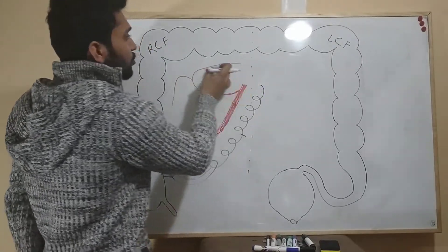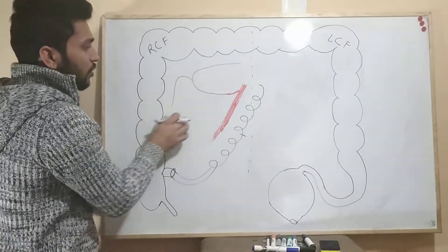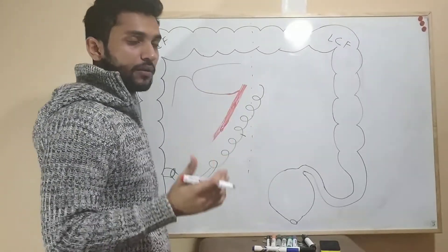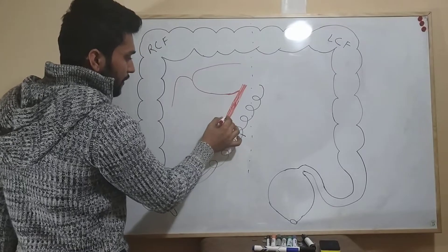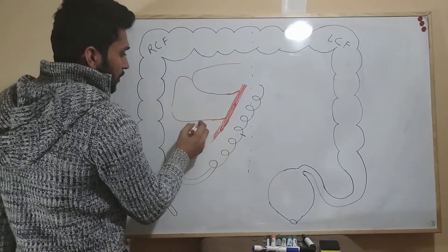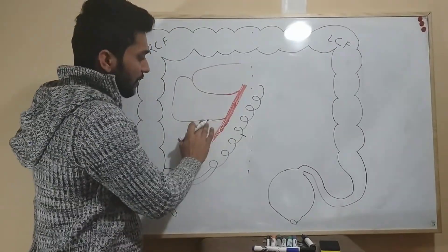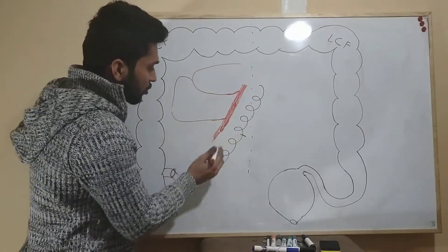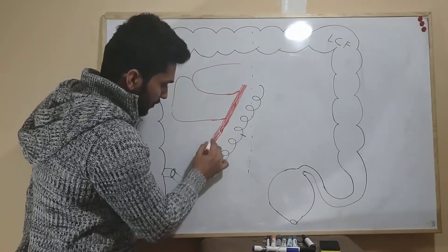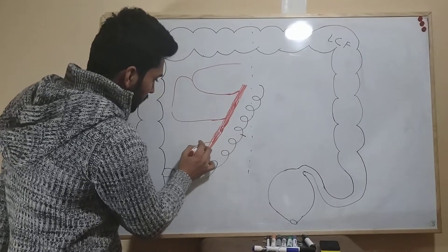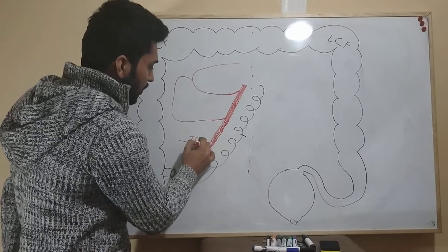From the superior mesenteric artery, one branch goes to the transverse colon and one branch goes to the ascending colon — this artery is called the middle colic artery. The second branch is the right colic artery. There are anastomoses between the middle colic artery and the right colic artery. The third branch is the ileocolic artery.